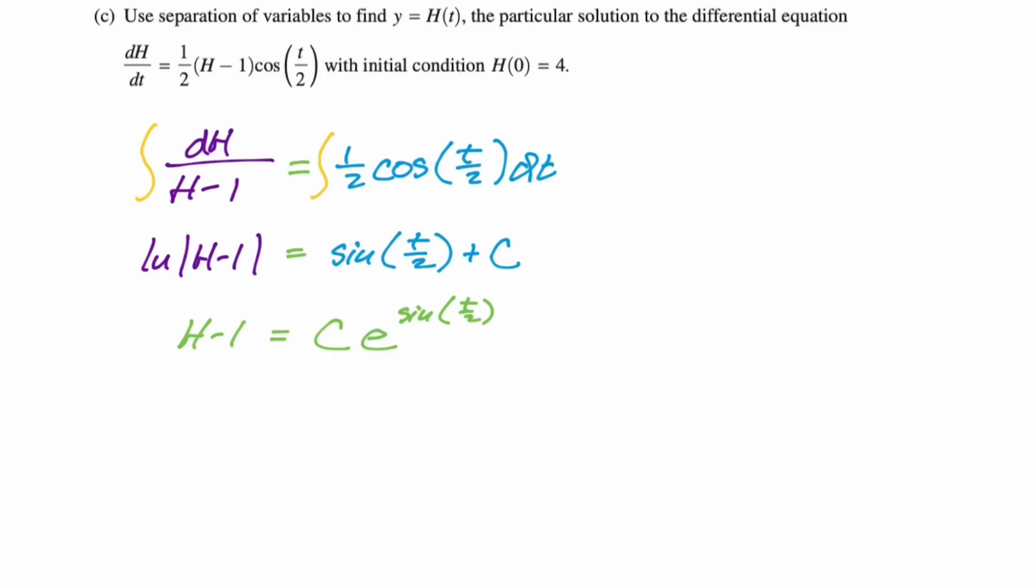And then we need to solve for c. So we're going to use h of zero equals four, and we'll plug in. So we get three is equal to c e to the sine of zero. The sine of zero is zero. So it's e to the zero, which is one. So we now know that c is three.